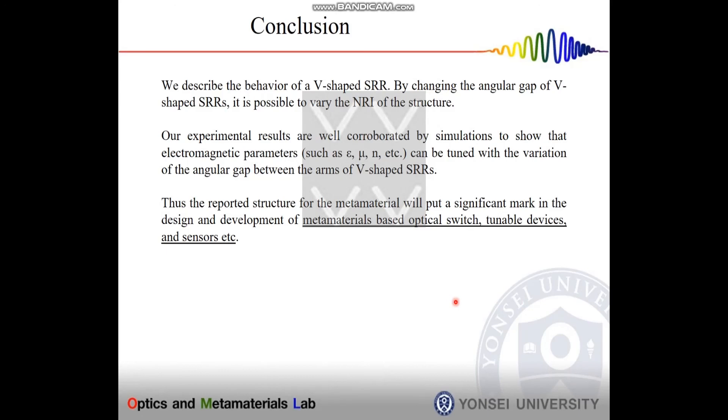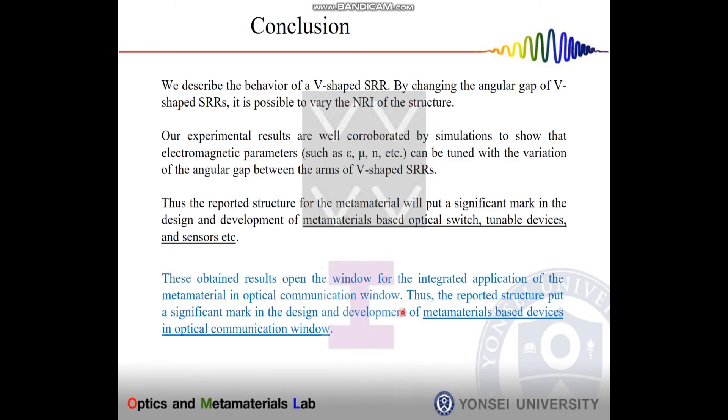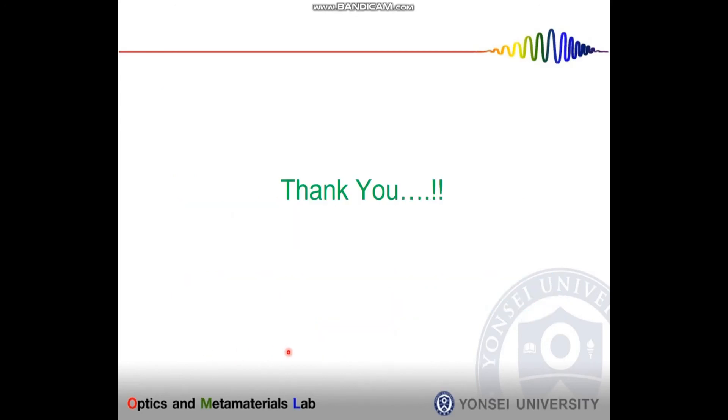In conclusion, I can say that by using the V-shaped metamaterial, we can make a metamaterial based optical switch, tunable devices and sensors. And by using the I-shaped metamaterial, we can make devices at optical communication window. Thank you so much for your attention.